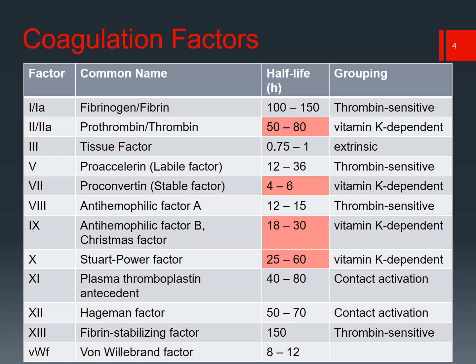You should recall from P1 year that we have fibrinogen, factor 1, which is activated to fibrin (1a). We have prothrombin, which is factor 2, and it is activated to our main regulator, thrombin (2a).